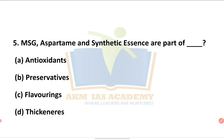Next question: MSG, aspartame, and synthetic essence are part of which category? Options are: antioxidant, preservatives, flavoring, or thickeners. MSG stands for monosodium glutamate. Aspartame is a sweetener that is 200 times sweeter than sucrose. Synthetic essence refers to artificially presented essence compounds. All of these are flavoring compounds, so the answer is flavoring.